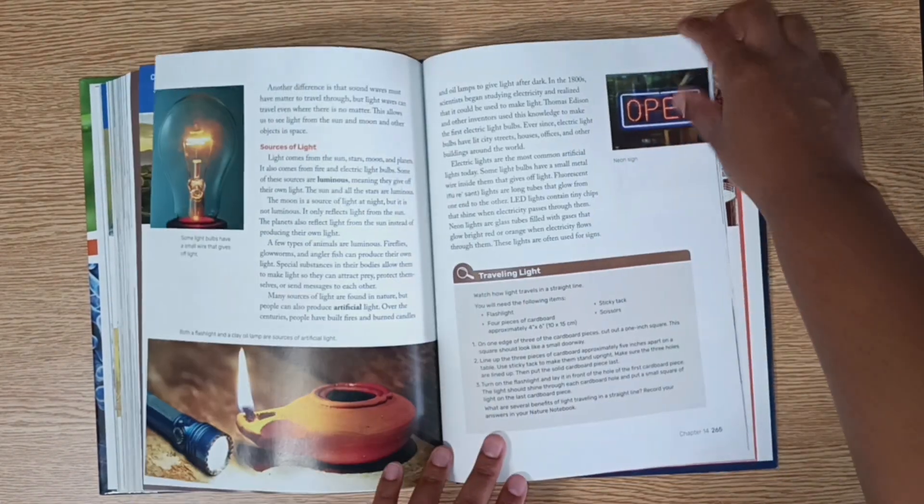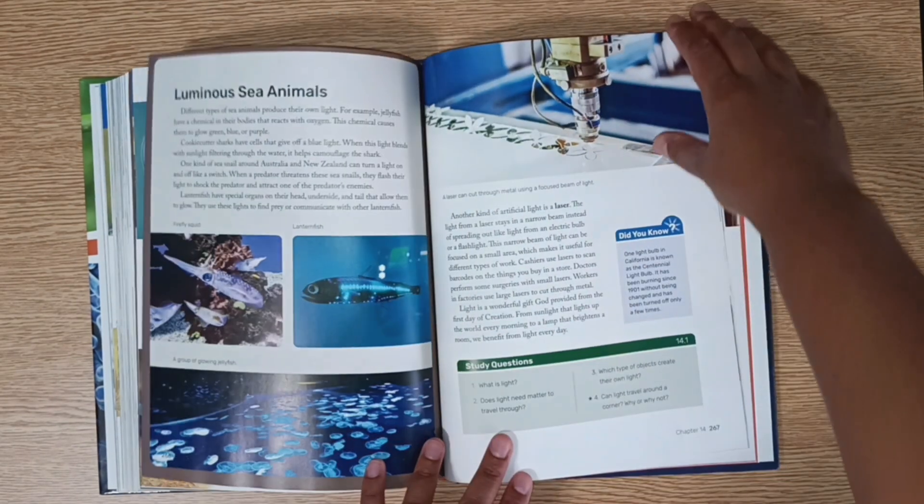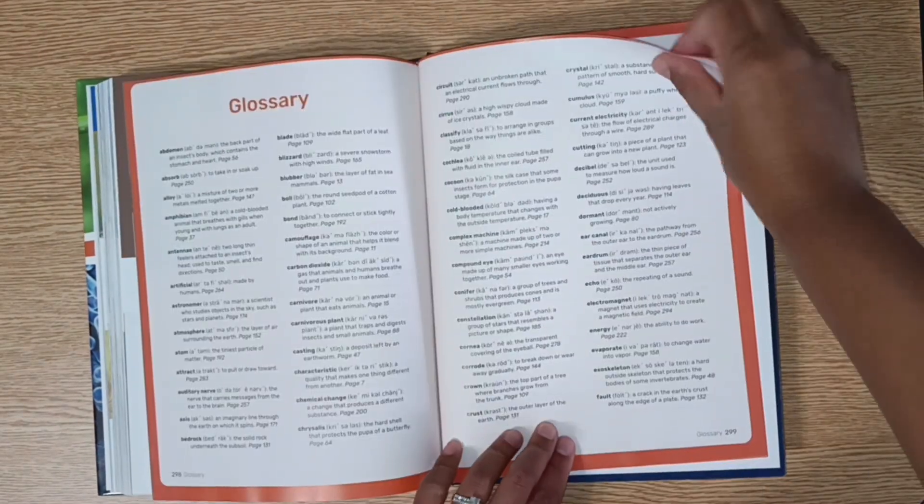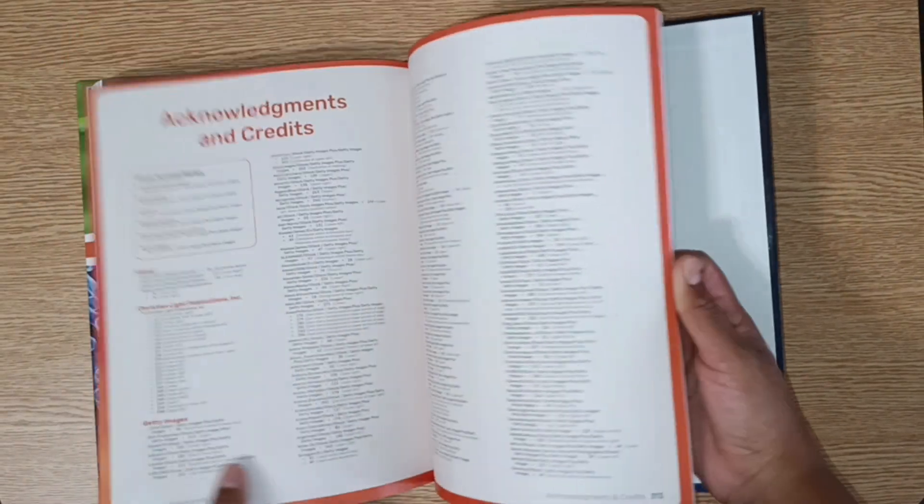And then next, learning about light and light sources. There's an activity here. In the back, there's also a glossary for all the vocabulary words and an index.